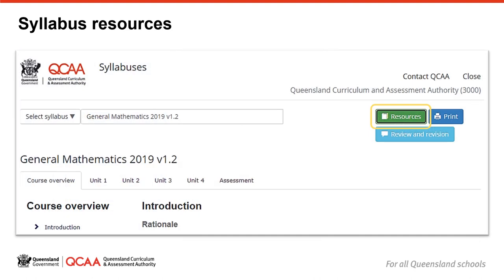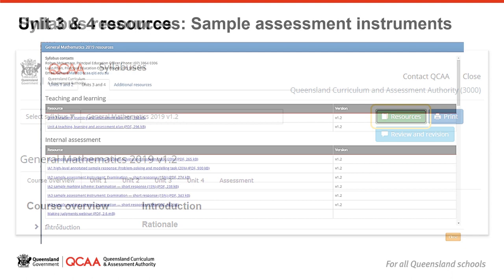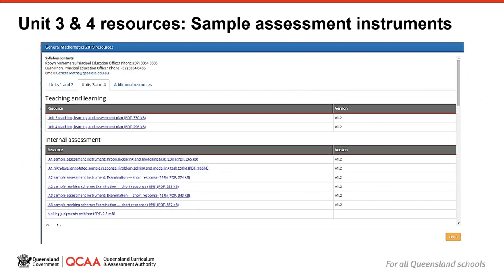Once you have located your syllabus, to access these resources, click on the green resources button at the top right of the screen. You can also access the contact details for QCAA staff for your subject. Under the Unit 3 and 4 tab, you can find sample assessment instruments to help you develop your assessment instrument. You should not copy the sample assessment instruments to use as your own, but use them as a guide to develop an assessment instrument that is suitable for your students and the learning experiences that they will engage in.